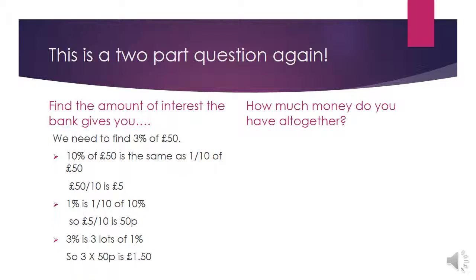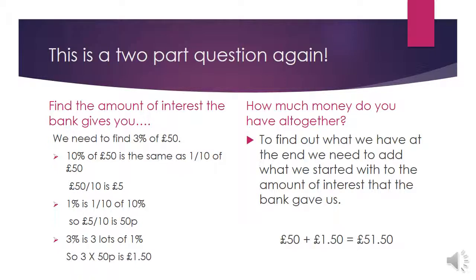So how much money do we have altogether? To find what we have at the end, we add what we started with — £50 from granny — to the interest the bank gave us, £1.50. So £50 plus £1.50 is £51.50, which is our final answer.